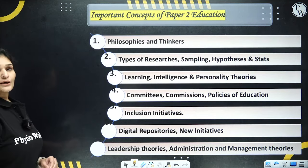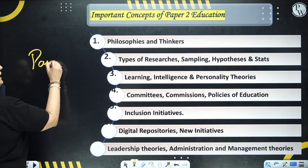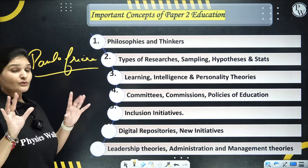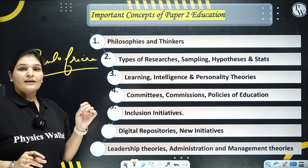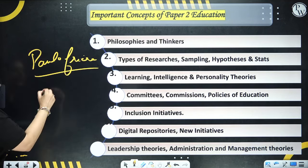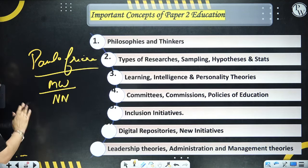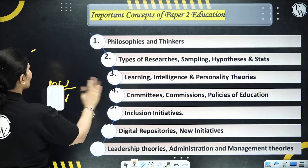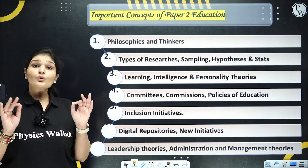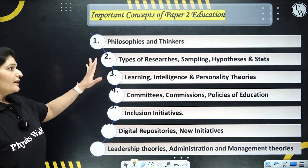For thinkers: Western thinkers — Paulo Freire has appeared in every paper since he entered the NET syllabus — minimum one question, up to three. Also Mary Wollstonecraft and Nell Noddings. Indian thinkers — Gandhi, Swami Vivekananda, Tagore, Savitribai Phule, and Jidhu Krishnamurti — three questions were asked on Krishnamurti in June 2023.